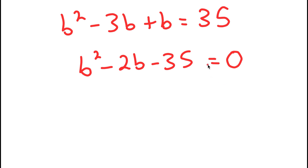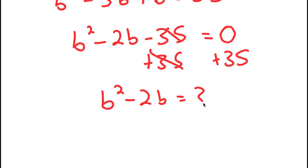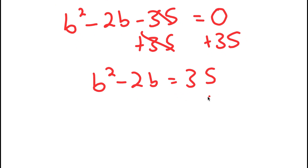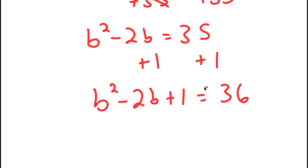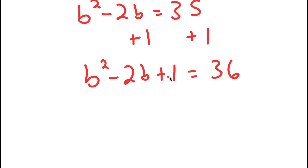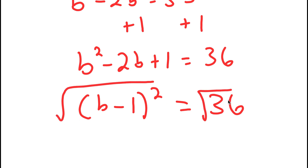Actually, let me step back. We have B squared minus 2B equals 35. I'm going to add 1 on both sides, giving B squared minus 2B plus 1 equals 36. The reason I did that is because B squared minus 2B plus 1 is the same as B minus 1 squared. Now I can take the square root on both sides, since the square root of 36 is a whole number.